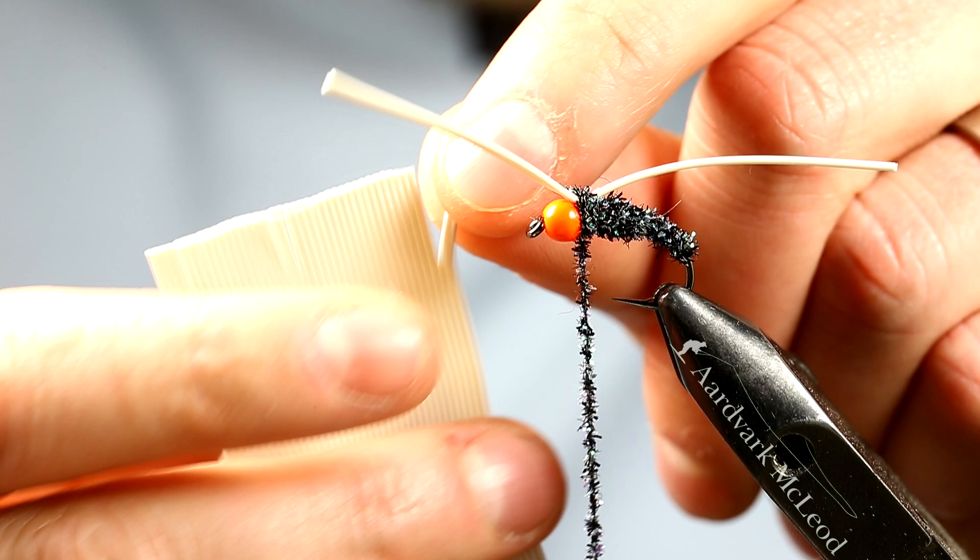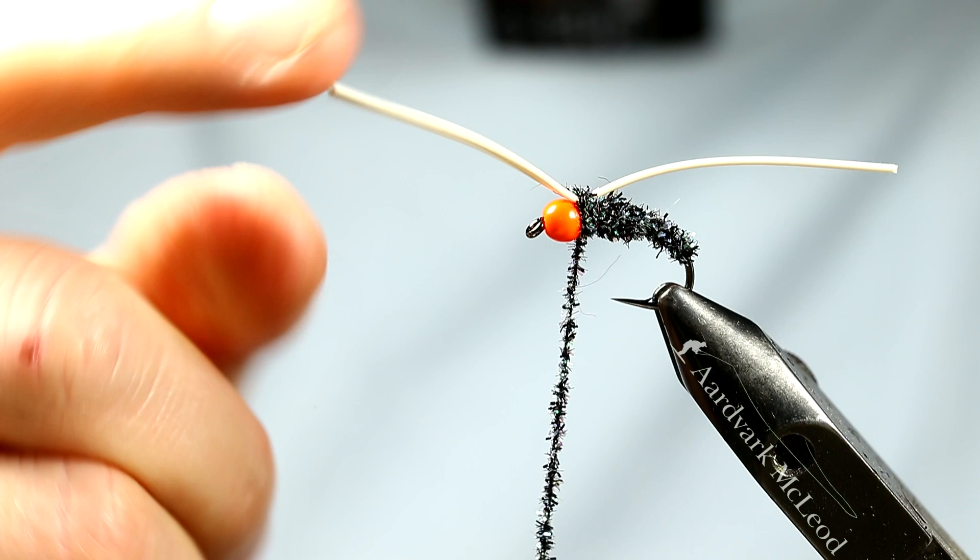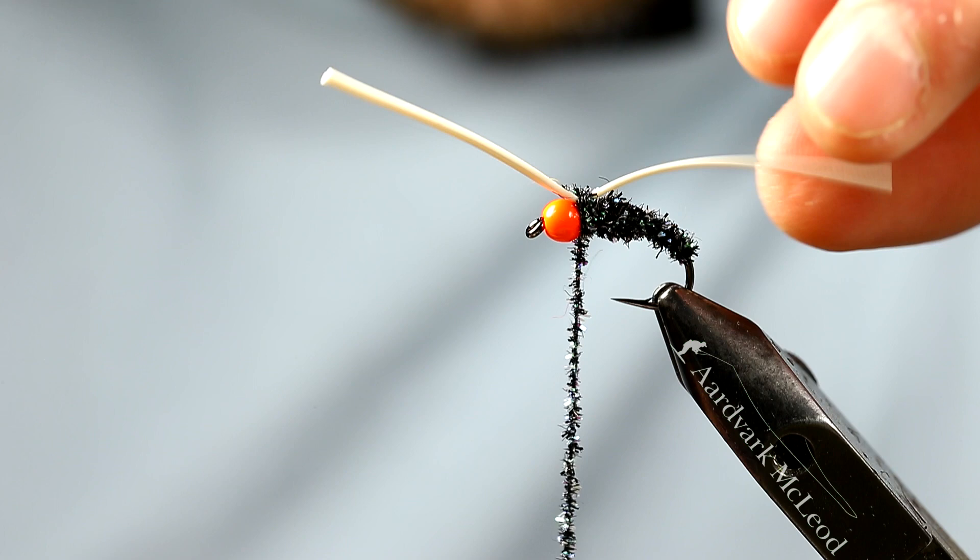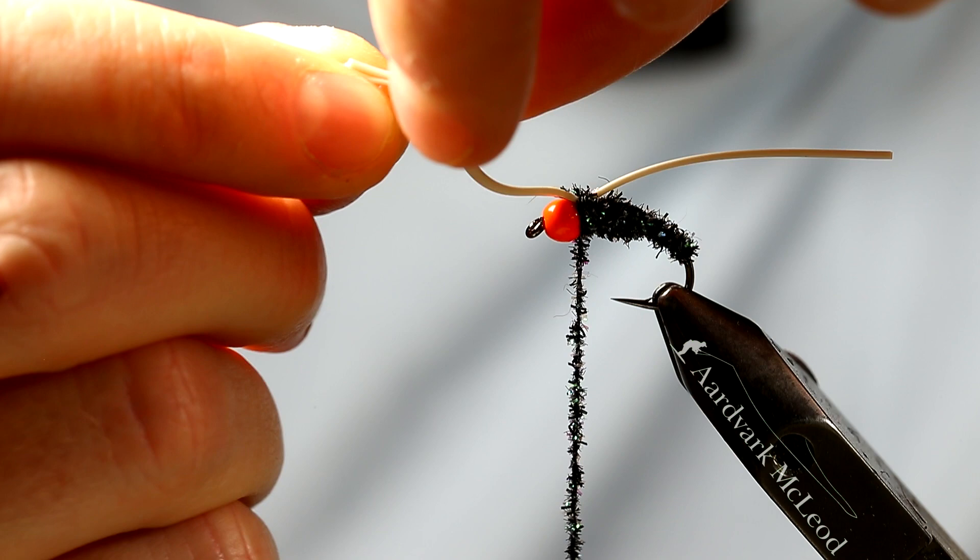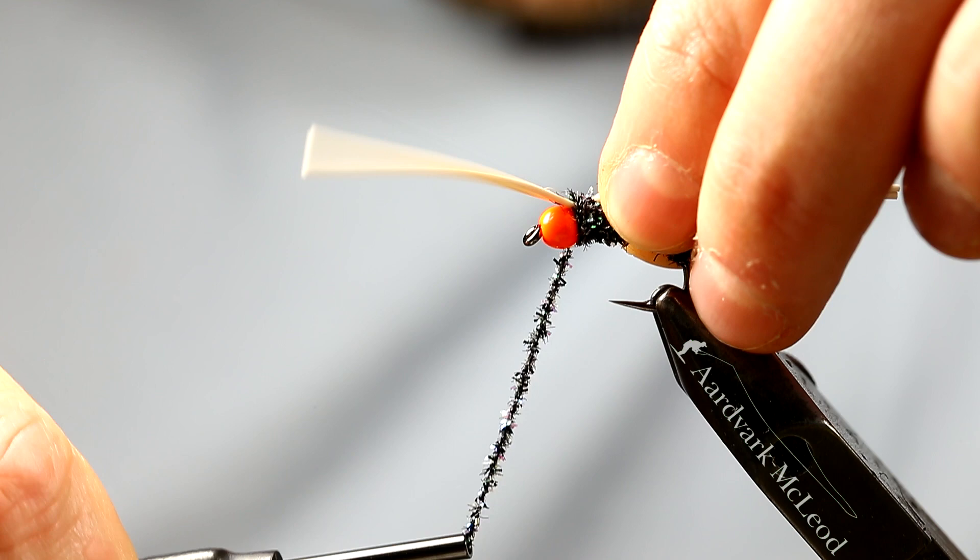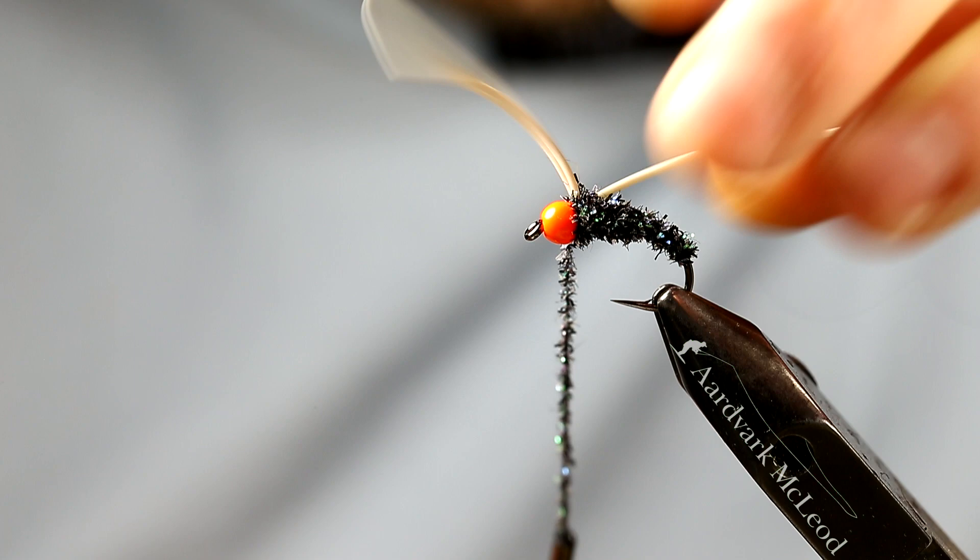So I've actually tied them in as two which are still joined. That makes life a lot easier. When you're at that point, I've done a couple of touching turns just to catch them in place. What you can do then is another turn and then another couple of turns just behind the bead and tie that off.